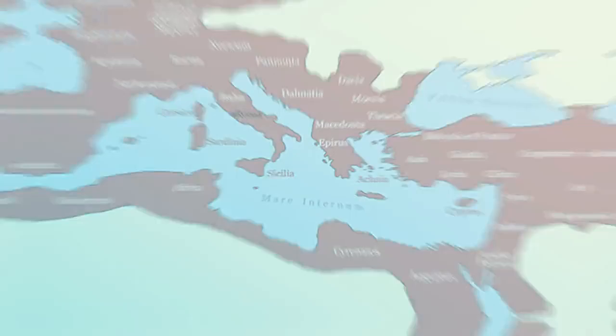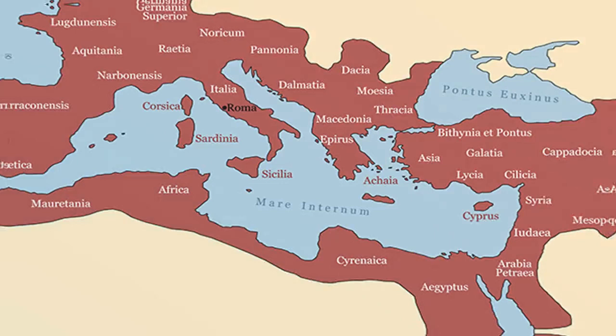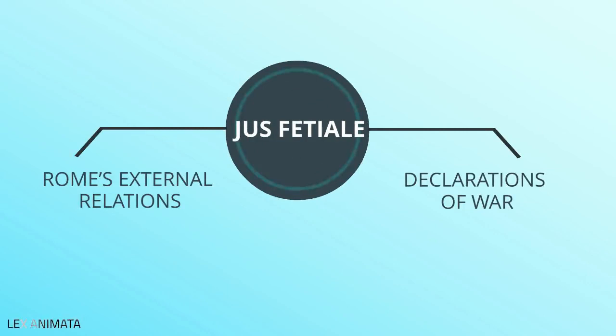Once Rome became an empire, the Romans organized their relations with foreigners based on two doctrines: Jus Fetiel and Jus Gentium. Jus Fetiel consisted of religious rules to govern Rome's external relations and its formal declarations of war, which recognized the inviolability of ambassadors, and were at the origin of the distinction between just and unjust war.